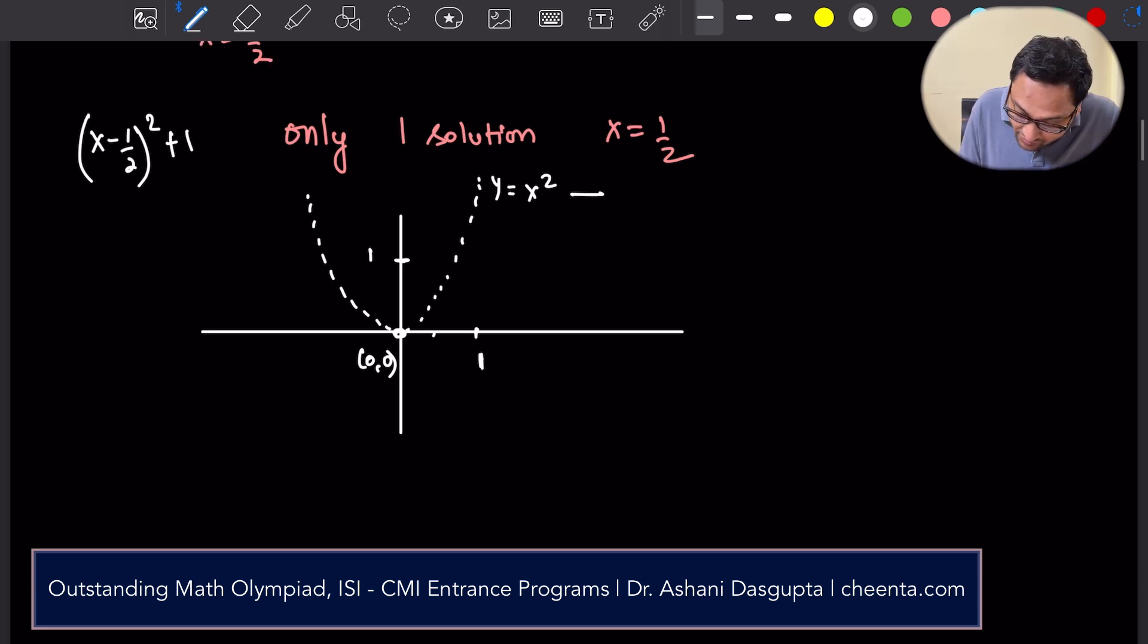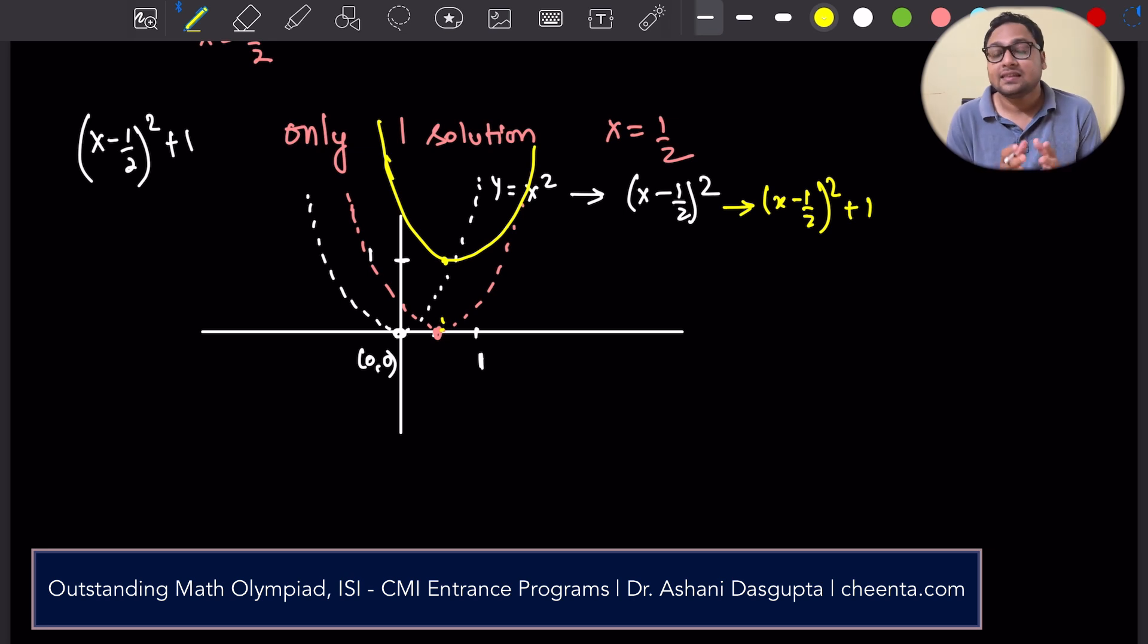So x minus, so let's convert it to x minus half whole square. So it is just a translation to the right by half units, like this. And then we add up x minus 2, x minus half whole square, we add a 1. So we move it up 1 unit. So it's here. So now you see that this yellow picture, yellow parabola is the graph of x minus half whole square plus 1.